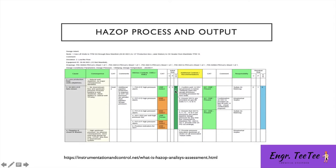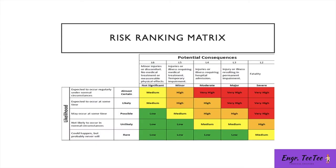The table also includes a column for additional controls, alongside the existing intrinsic controls already in place. A responsibility column records what additional controls need to be implemented, creating an action list. The residual risk column shows that after applying additional controls, the probability dropped from three to one and the risk ranking improved from B to A.